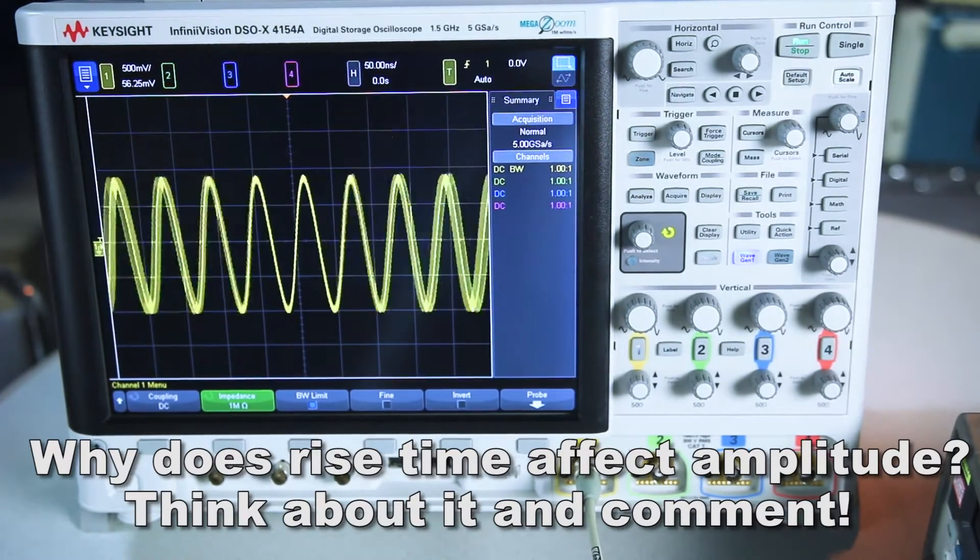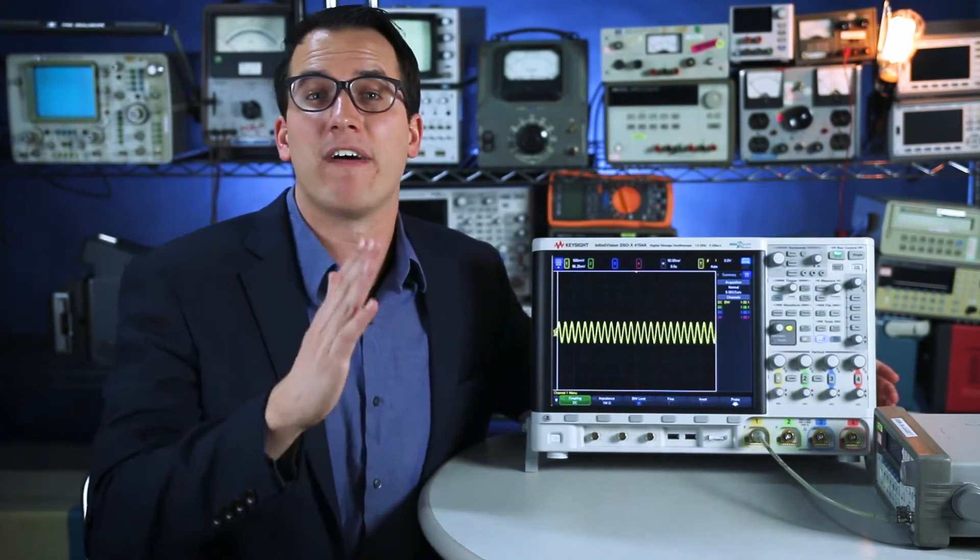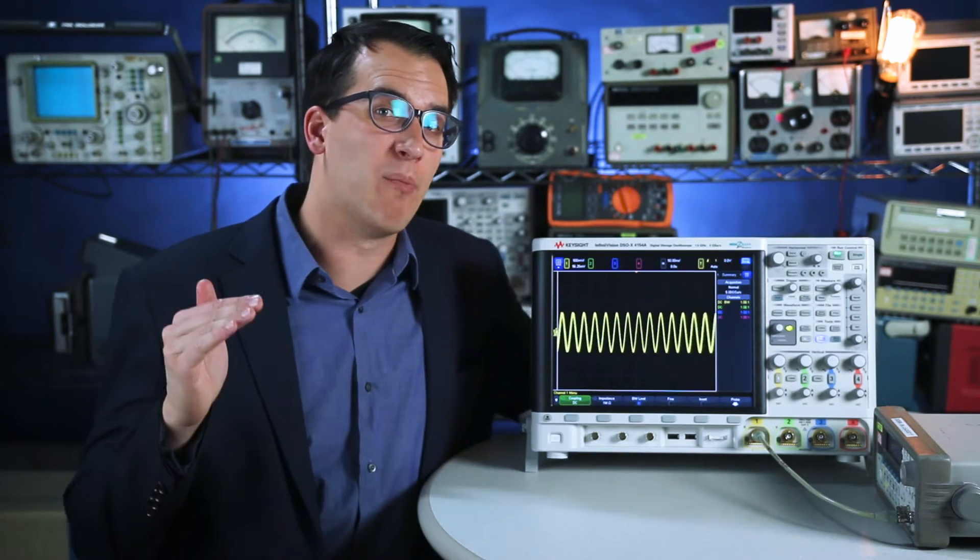That's because the circuitry of a 20MHz oscilloscope is not going to be able to actually acquire signals with that fast of a rise time or that high of a frequency. Essentially the scope behaves as a low pass filter with a corner frequency right around that of the bandwidth of the scope.